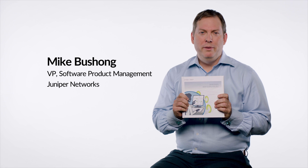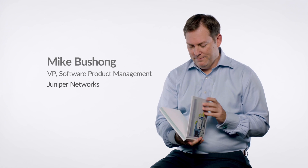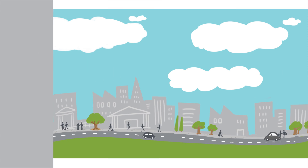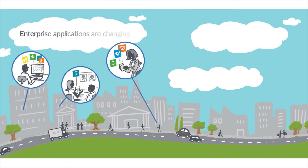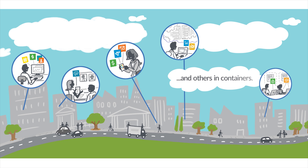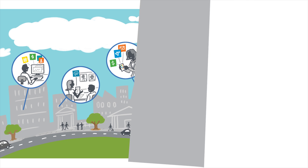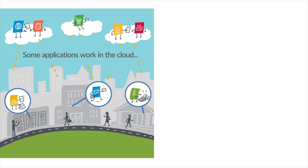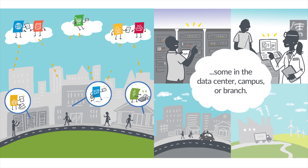Let's simplify EVPN VXLAN. Enterprise applications are changing. Some apps are running in virtual machines, and others in containers. Some applications work in the cloud, some in the data center, campus, or branch.